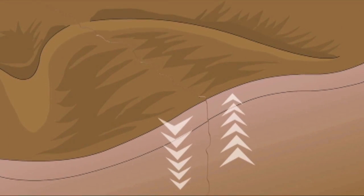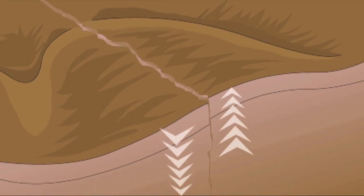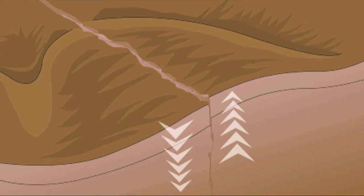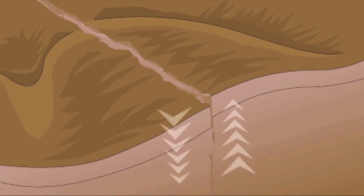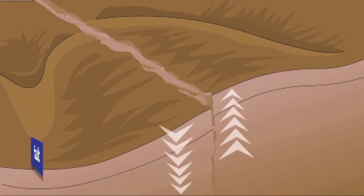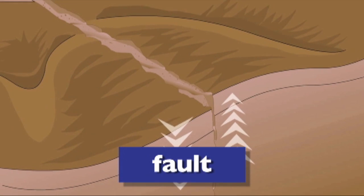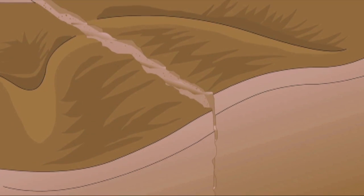Now sometimes, when the earth's plates collide with each other, one plate gives way because the crust is weak. The place where the crust is weak is called a fault. That's how fault mountains are formed.